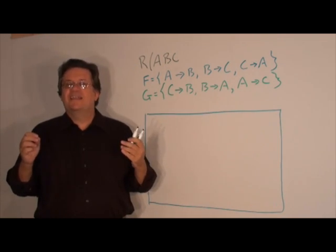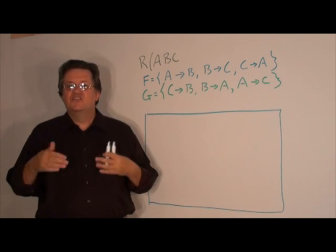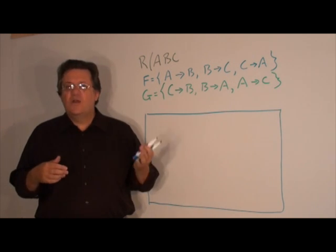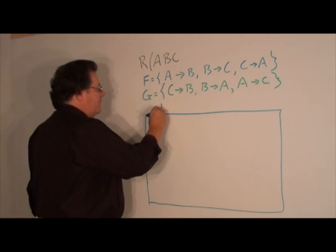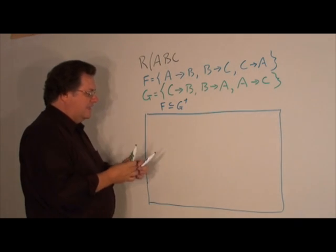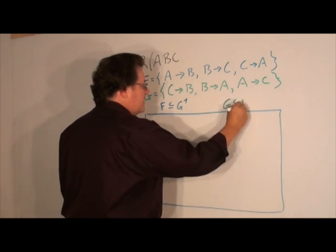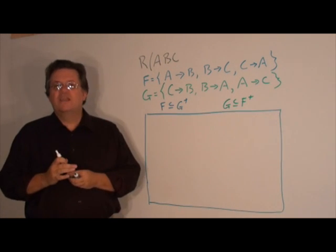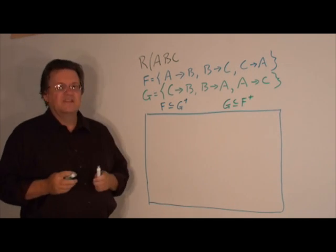Up to this point we said that F was equivalent to G, but we don't have a process to show whether or not F is equivalent to G. We're going to do that right now. To show F is equivalent to G, we need to show two things: first, that F is a subset of G closure, and second, that G is a subset of F closure. If we can show both those things, then F is indeed equivalent to G.